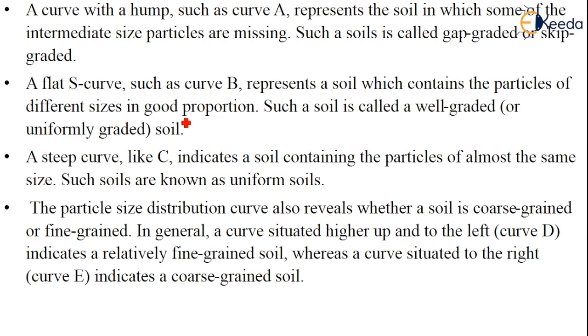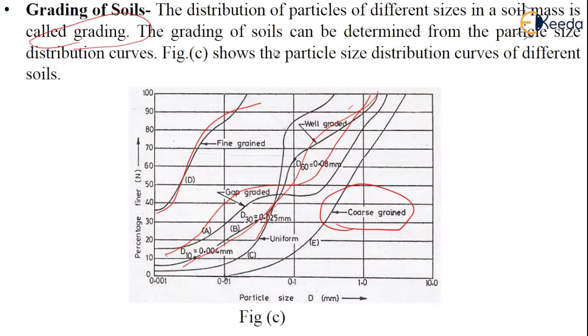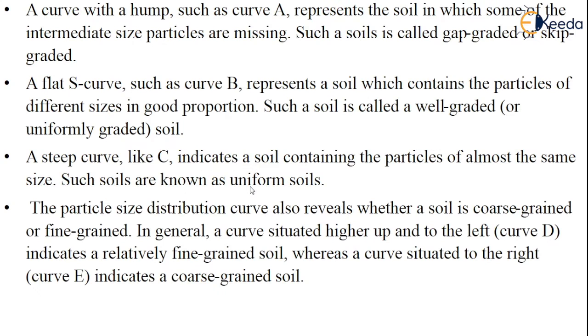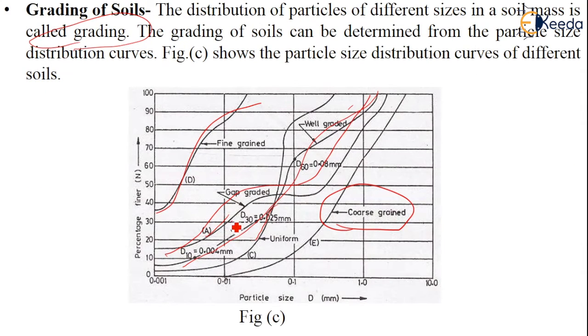A curve with a hump such as curve A represents the soil in which some of the intermediate size particles are missing. Such soils are called gap graded or skip graded. See there is a nice hump.